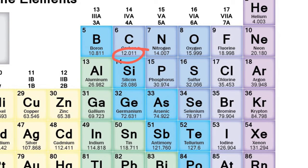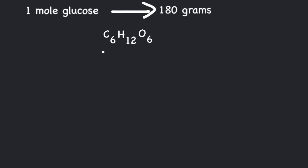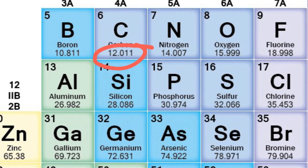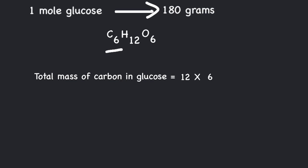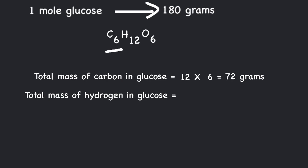So we get 12 × 6 = 72 grams of carbon. Similarly, the atomic mass of hydrogen in the periodic table is 1. Since there are 12 hydrogens in glucose, we multiply 1 by 12, giving 12 grams of hydrogen.